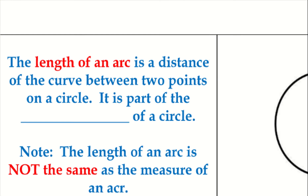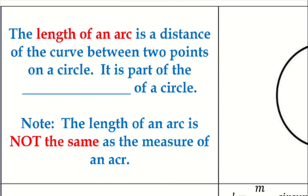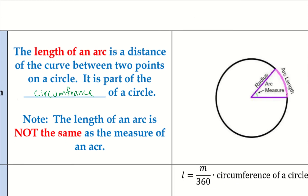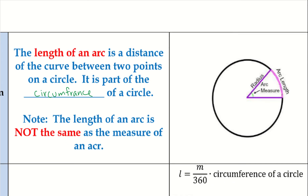Let's talk about length of an arc. The length of an arc is the distance of the curve between two points on the circle — it is part of the circumference of a circle. Note: the length of an arc is not the same as the measure of an arc. This is very important because there is a difference between finding the arc length versus the arc measure, based on the equations from 10.4 compared to 10.5.